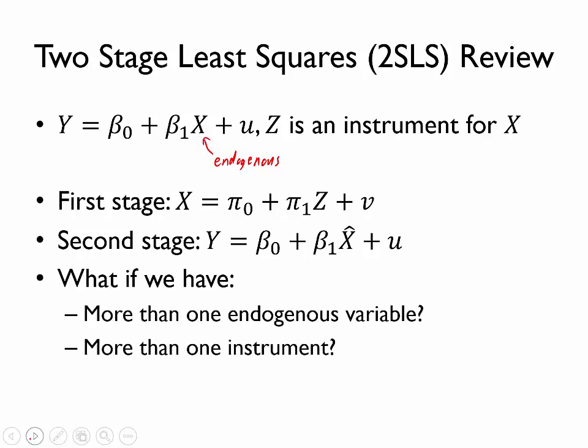But it does leave a few questions. First, what if we have more than one endogenous variable? And second, what if we have more than one instrument? In what cases should we be concerned, and in which cases is it okay to have more than one of these? We'll answer that question shortly by introducing a series of definitions all related to an idea called identification.